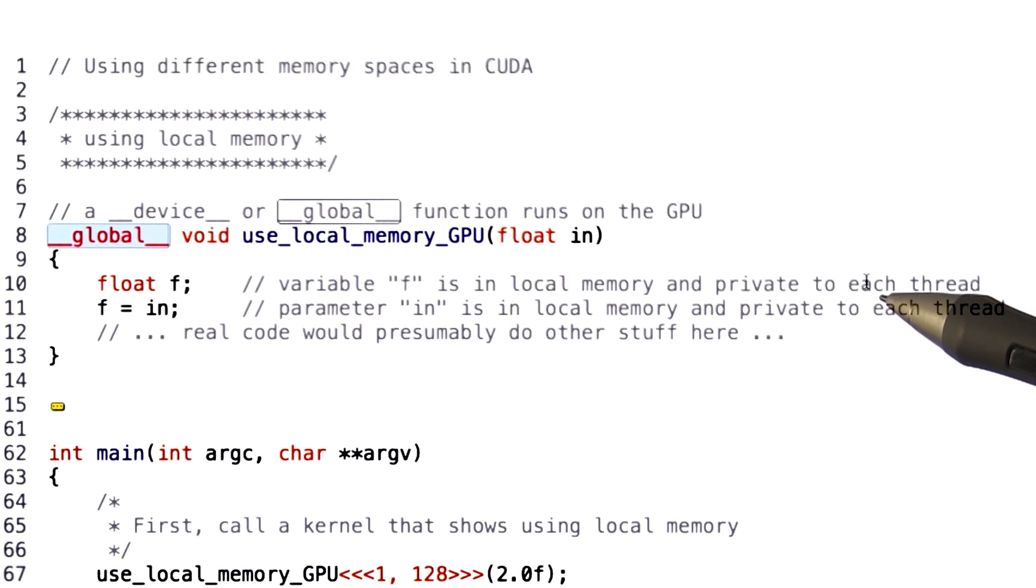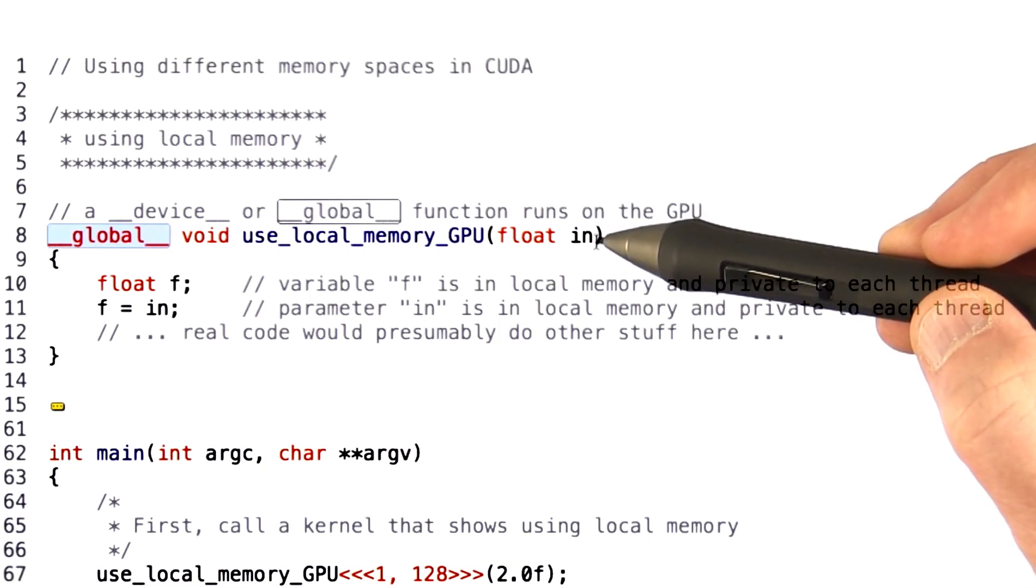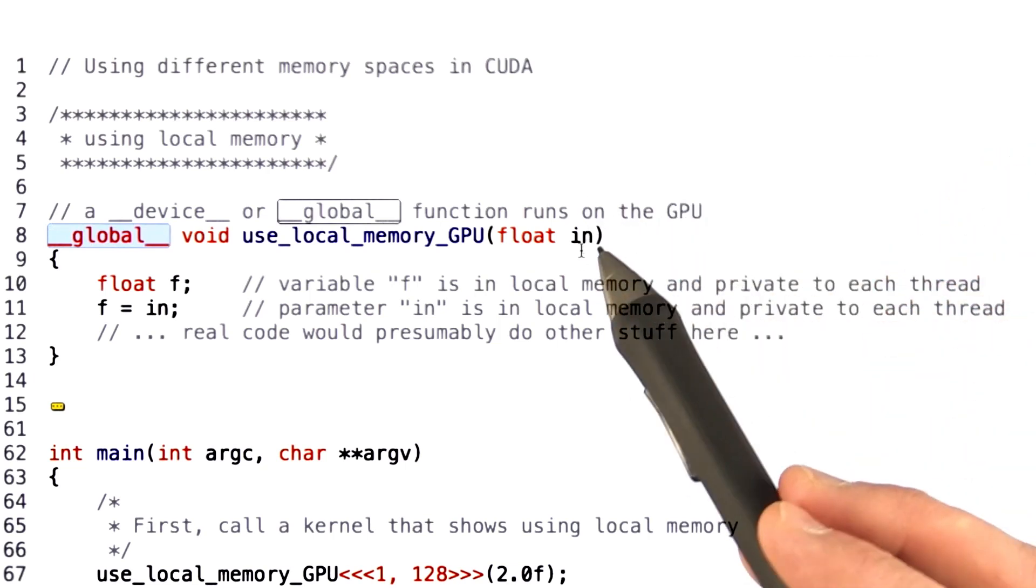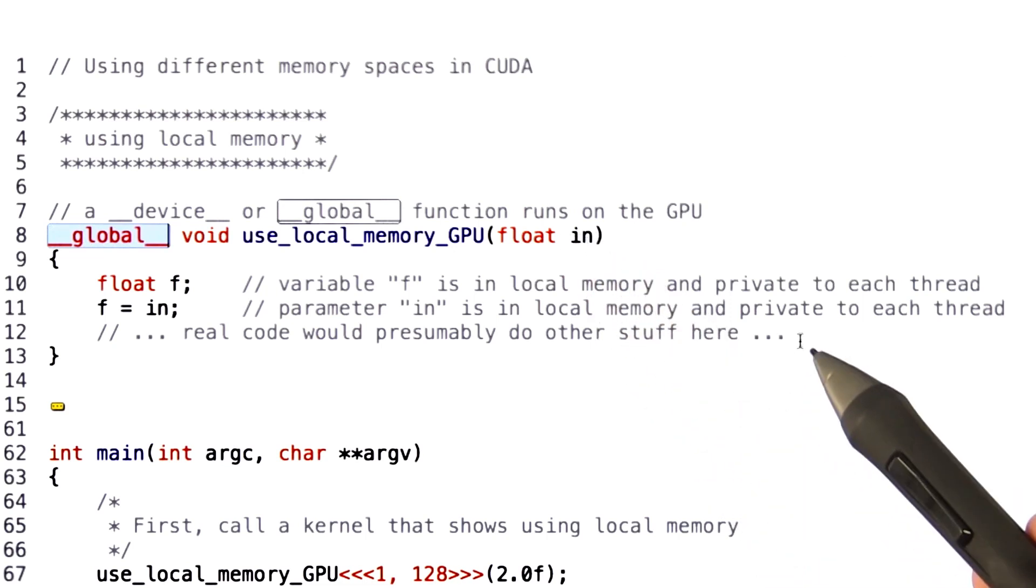Because this is a local variable, it's in local memory, it's private to this thread. Every thread will have its own copy of a variable named f. And parameters are also local memory, so every thread will have its own copy of a parameter called n. Real code would presumably do something with these variables, but since this is just an example of how to use local memory, I don't need to do that.